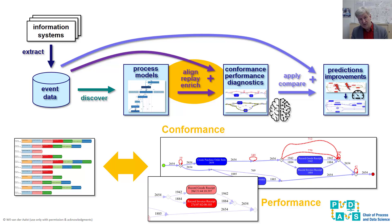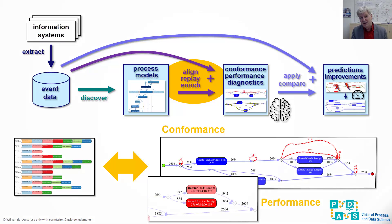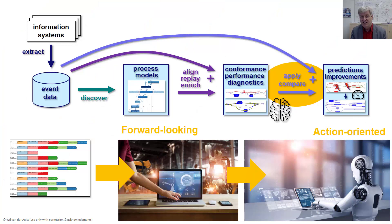For example, looking at the topic of conformance checking, this poses interesting challenges that relate to optimization problems that you need to solve. Of course, the goal is to actually improve processes and to predict what is going on. Process Mining has a very natural way of creating machine learning problems that tell you what is going to happen next, and what kind of actions you can take to improve these processes and to avoid certain problems.